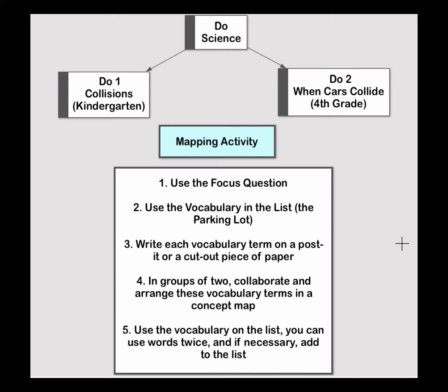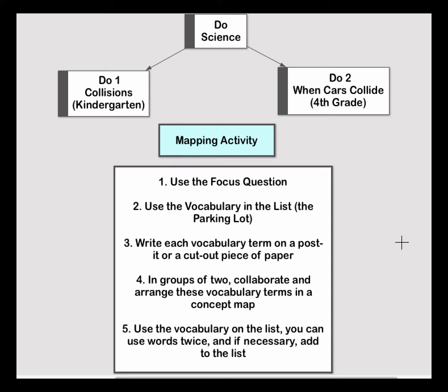Here are the directions for your mapping activity. Use the focus question and the vocabulary in the parking lot. To prepare for the map, either use post-it notes with each vocabulary term, or write all the terms on paper and cut them out. You need to be able to move these words around. Start with what everyone has — pencil, paper, scissors, glue, post-it notes, whatever is available. We don't necessarily need to move to an electronic form yet. In groups of two, use the focus question and the words in the parking lot. Start to arrange these to capture the big ideas and supporting ideas. Be flexible — add to the list, use words more than once, and use your discussion and dialogue to help build this concept map.